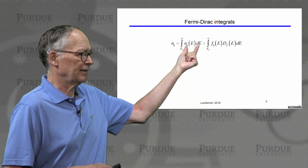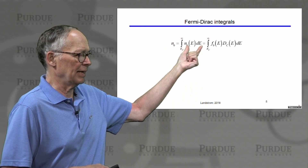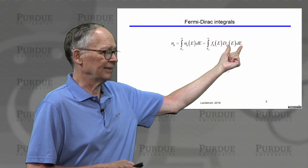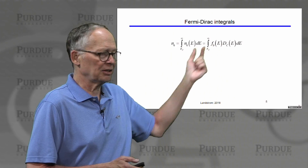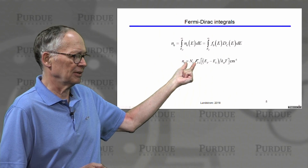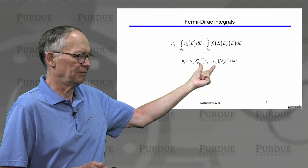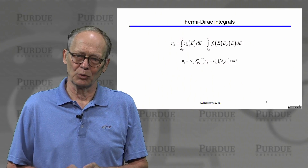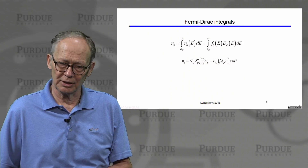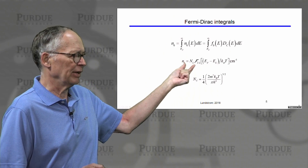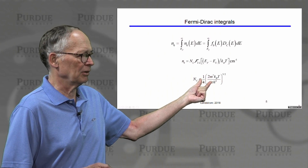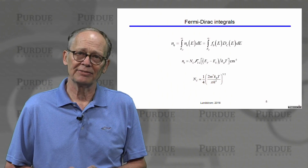To do that, we take the number of states in an energy range and integrate them across all energies in the conduction band. The number of states is the density of states times dE, and the probability that they're occupied is given by the Fermi-Dirac integral. The result turns out to be a collection of constants and parameters involving the Fermi-Dirac integral of order one-half, which depends on where the Fermi level is located with respect to the bottom of the conduction band. The parameter N_c we call the effective density of states; it depends on temperature, some fundamental constants, and very importantly on the effective mass of the semiconductor.